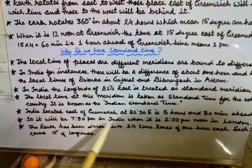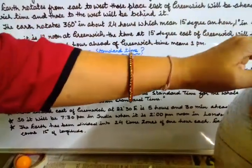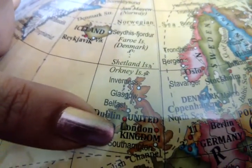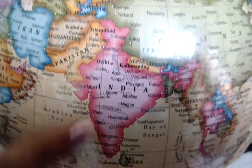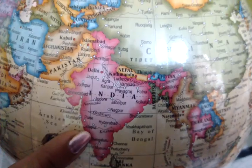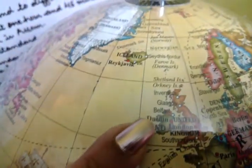It will be 7:30 pm in India when it is 2:00 pm noon in London. London is located right on the prime meridian. Moving east from London, we reach India — and the difference is 5 hours 30 minutes. So if it is 7:30 pm in India, it will be 2 o'clock noon in London.